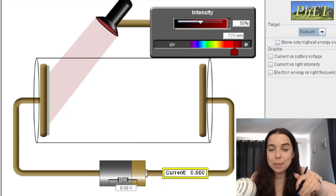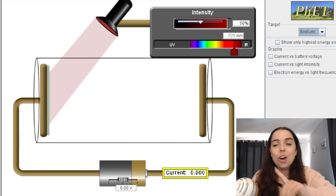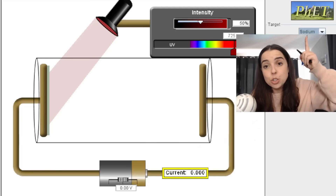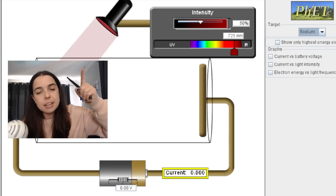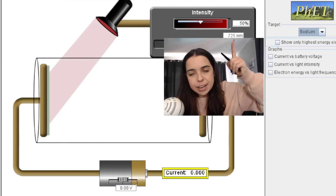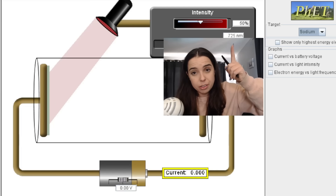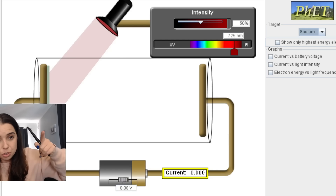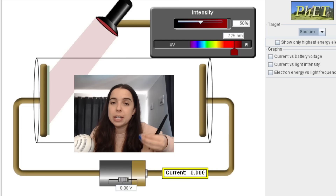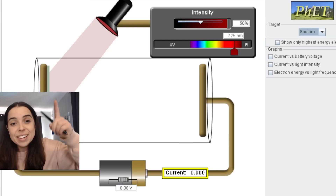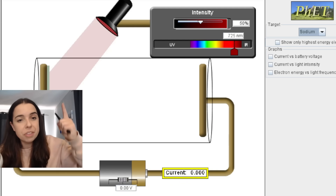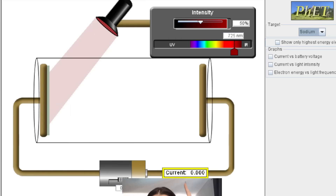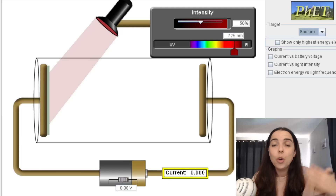This simulation, which I'll link below, is really helpful to understand this concept. Over here we have a photo cell — this is a metal plate. In this example, the metal is sodium, Na. We've got light; in this case we're starting off with red light. There's the wavelength of the red light, and as soon as we know the wavelength we can calculate the frequency. The light is incident, which means it's shone on the metal surface. If the light has a suitable frequency, electrons will escape and current will be generated — that's why it's called a photo cell. We are generating electricity.